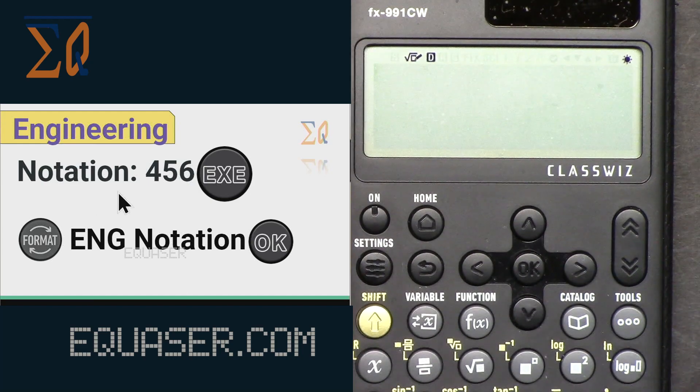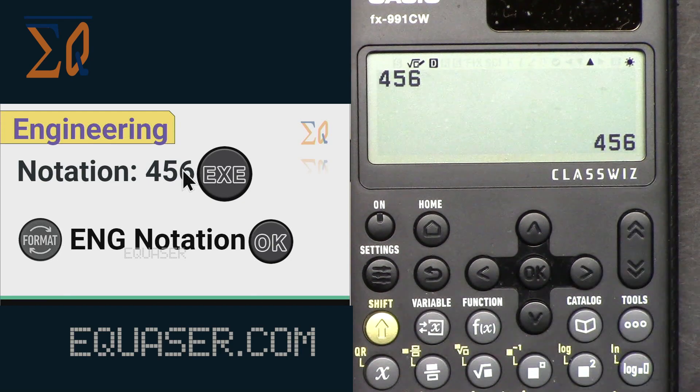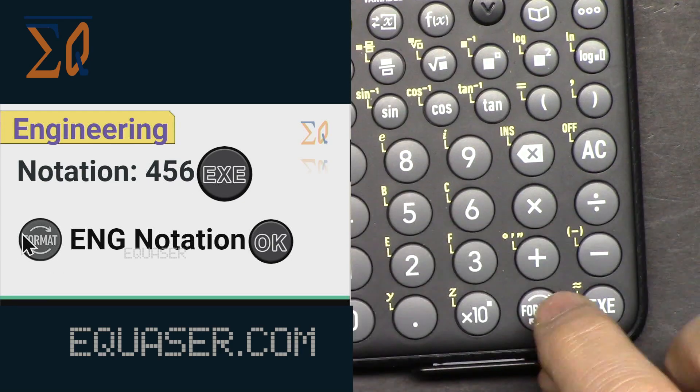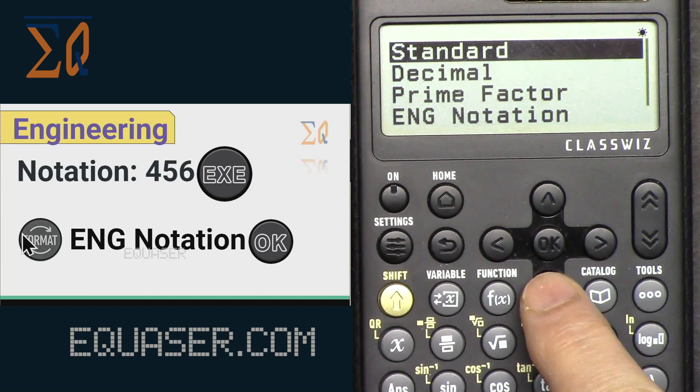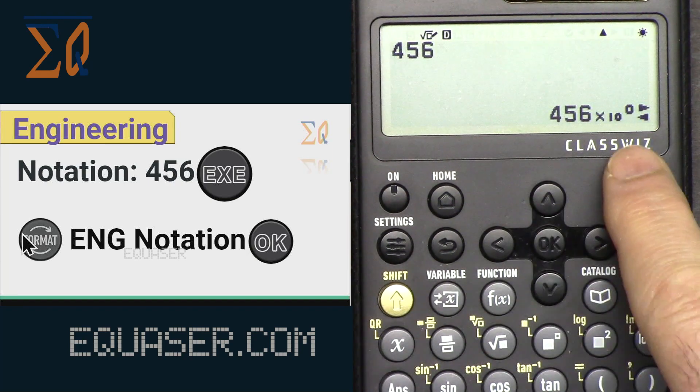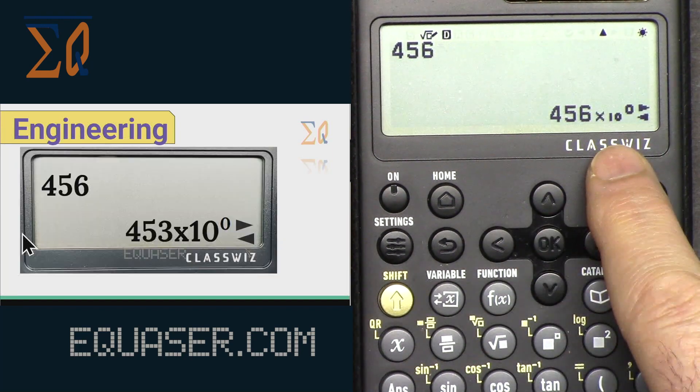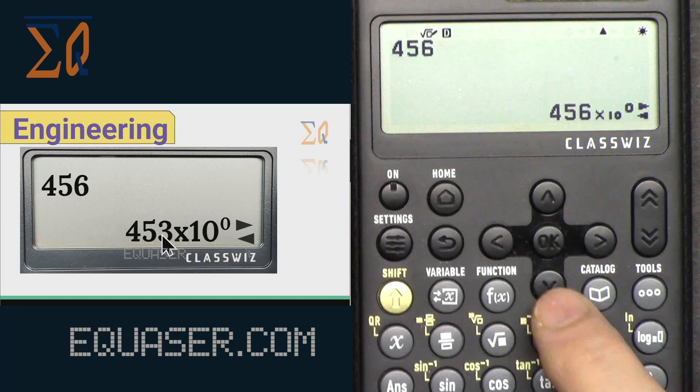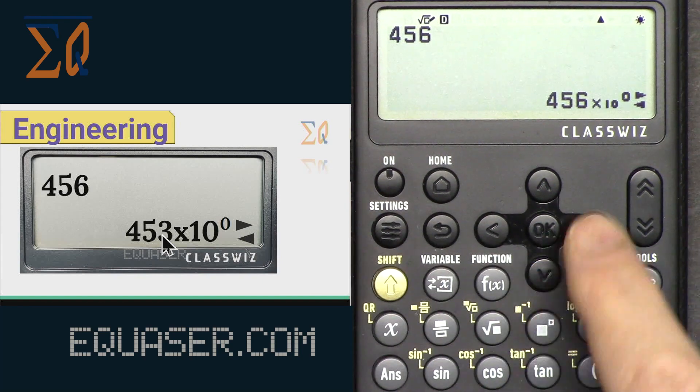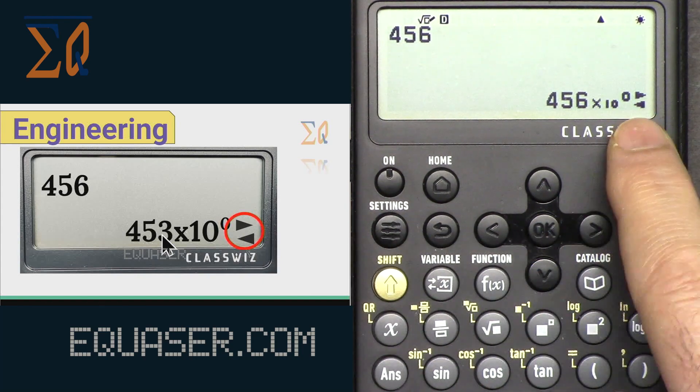For engineering notation, for example if you enter 5456 and then equal, and then go to format. The format is this button here. I'm pressing format and then go engineering notation. You will see the number like this on the screen. I entered here 3, don't worry about the 3.